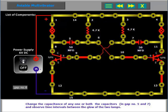Change the capacitance of any one or both the capacitors in gap number 5 and 7, and observe time intervals between the glow of the two lamps.